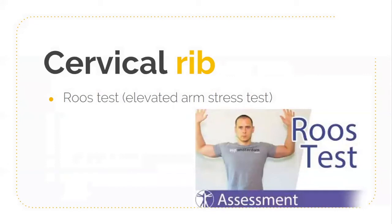The next clinical examination is the Roos test, also called the Elevated Arm Stress Test. The shoulder is abducted to 90 degrees and external rotation is performed — this position is called the surrender position. Then ask the patient to clench the fist slowly and gently, continuously for three minutes.